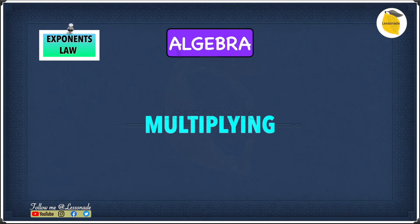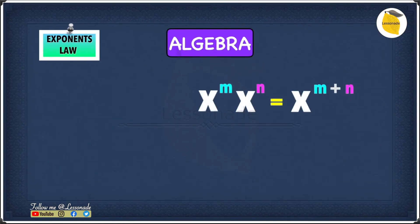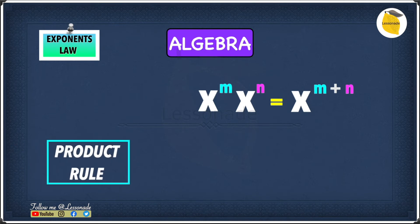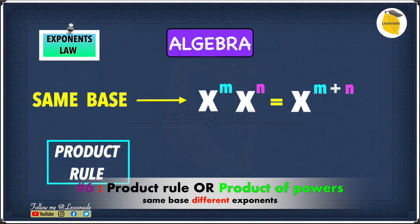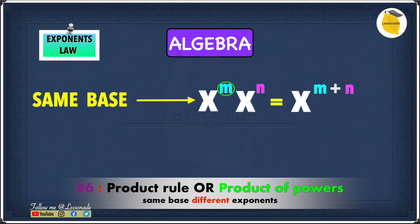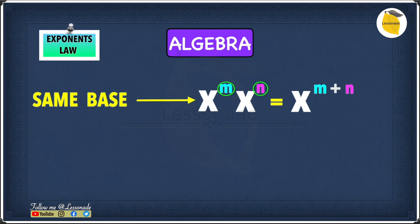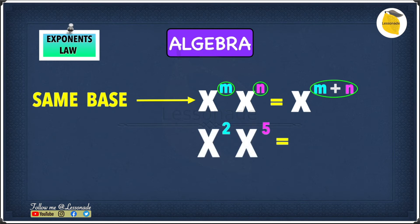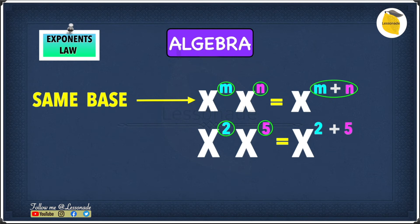Now let's look at multiplying rules for exponents. The first is the product rule: x to the power of m times x to the power of n equals x to the power of m plus n. This works when you have the same base but different exponents — you simply add the two exponents. For example, x to the power of 2 times x to the power of 5: keep the base x, then 2 plus 5 equals 7, giving x to the power of 7.